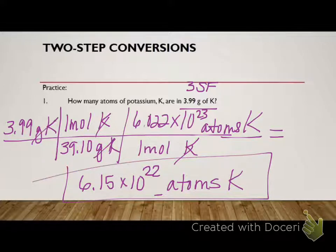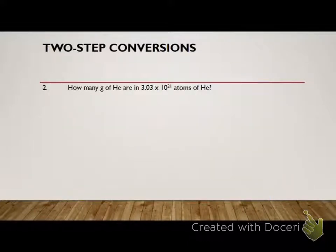So now let's do one where we're going to go from atoms to grams now, so I can see one of each kind. We have 3.03 times 10 to the 21 atoms of helium.